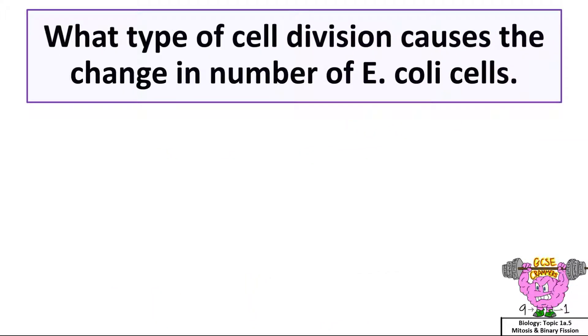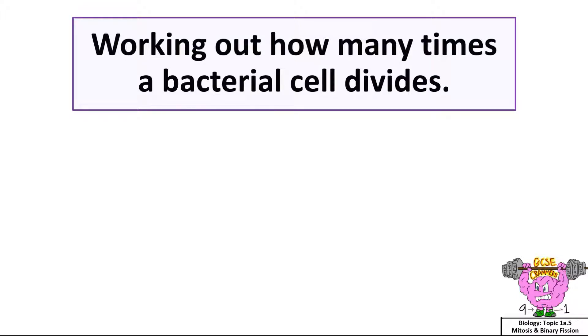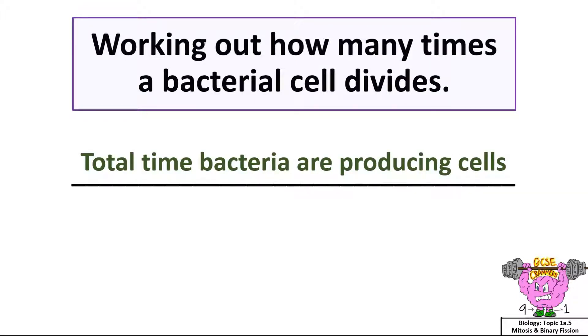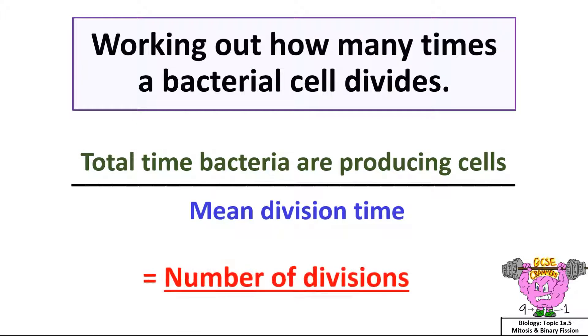What type of cell division causes the change in the number of E. coli cells? Binary fission. Working out how many times the bacterial cell divides, use the equation: total time bacteria are producing cells divided by the mean division time, and that will give you the number of divisions.